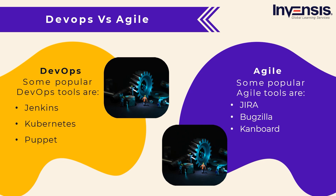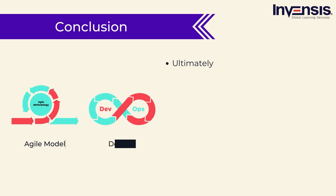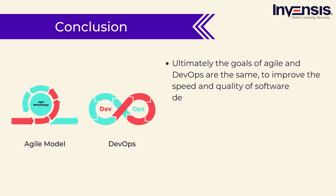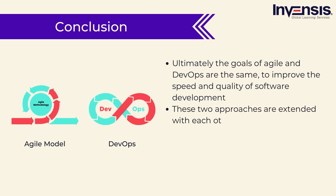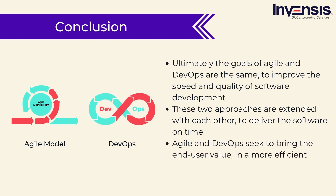A few other differences: software development, testing, and deployment happen in both DevOps and Agile. However, pure Agile tends to stop after these three stages. In contrast, DevOps includes operations which happen continually, so monitoring and software development are also continuous. Ultimately, the goals of Agile and DevOps are the same — to improve the speed and quality of software development. These two approaches extend each other to deliver software on time. Agile and DevOps both seek to bring end-user value in a more efficient way, but from different angles.